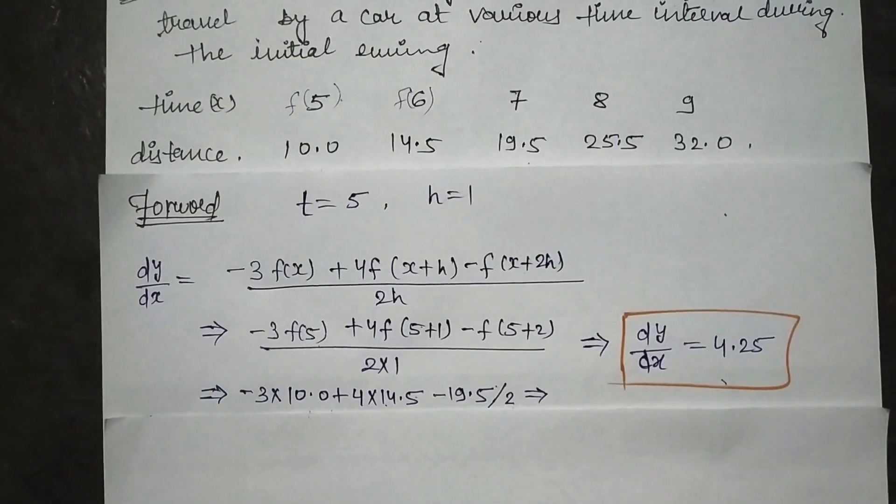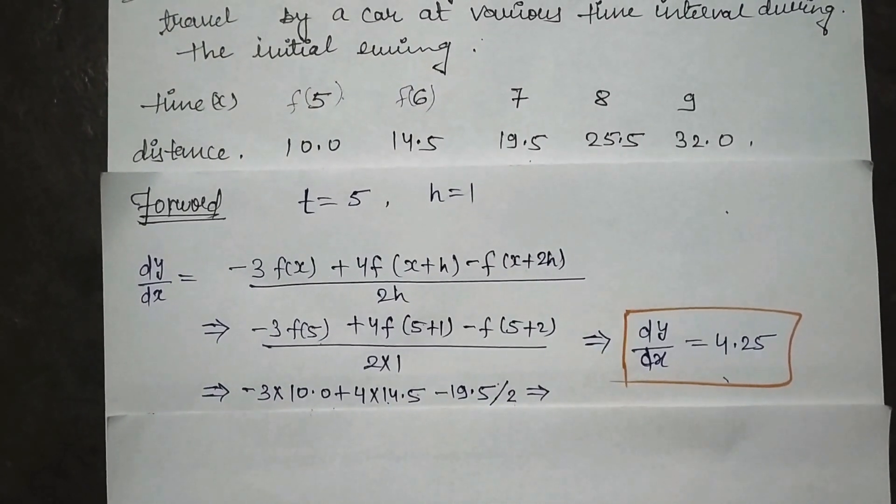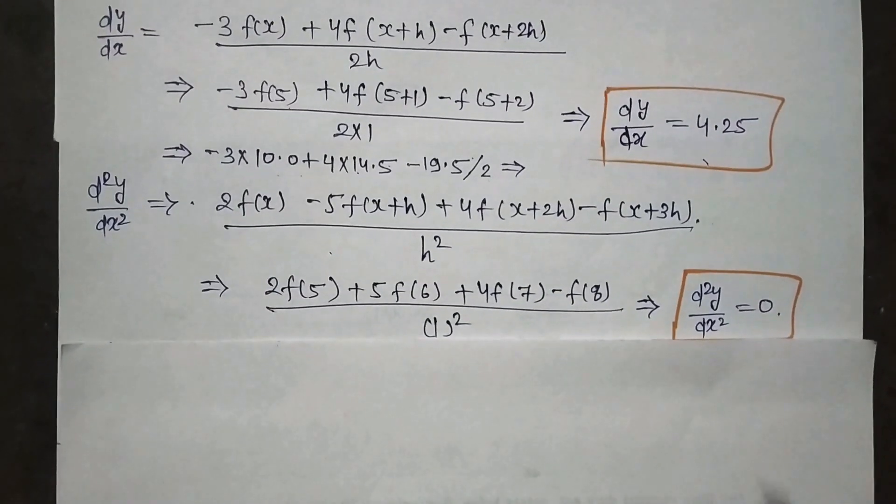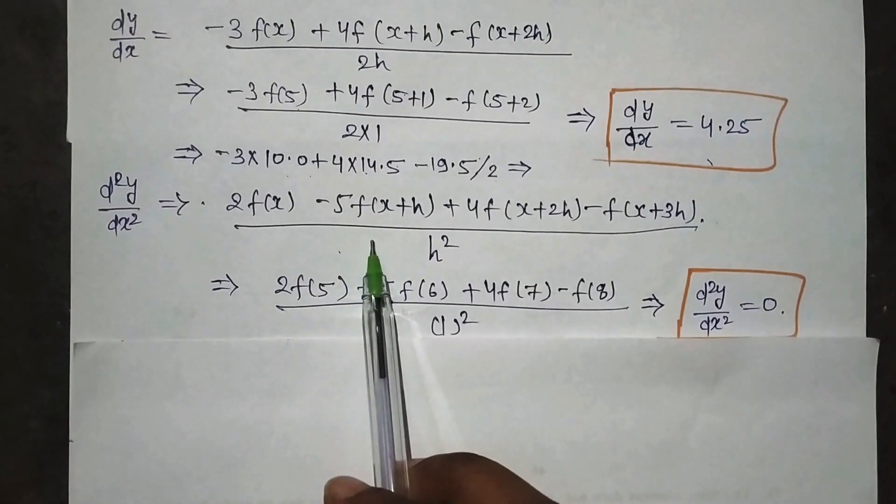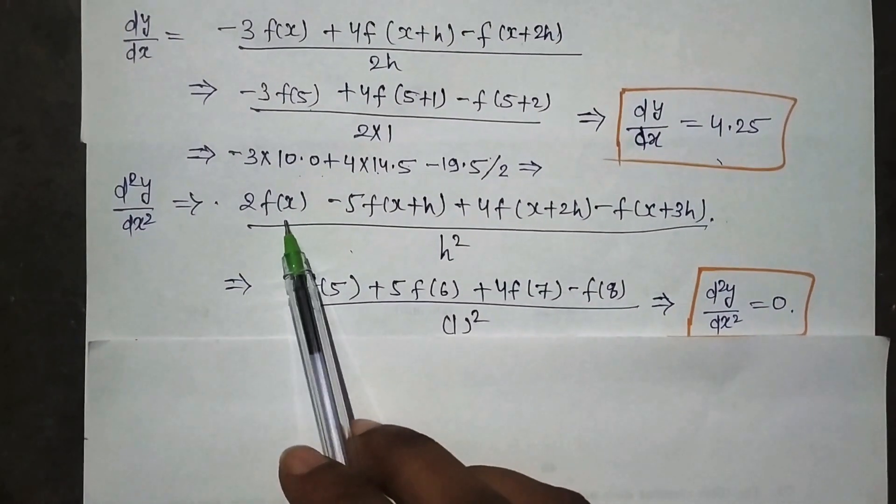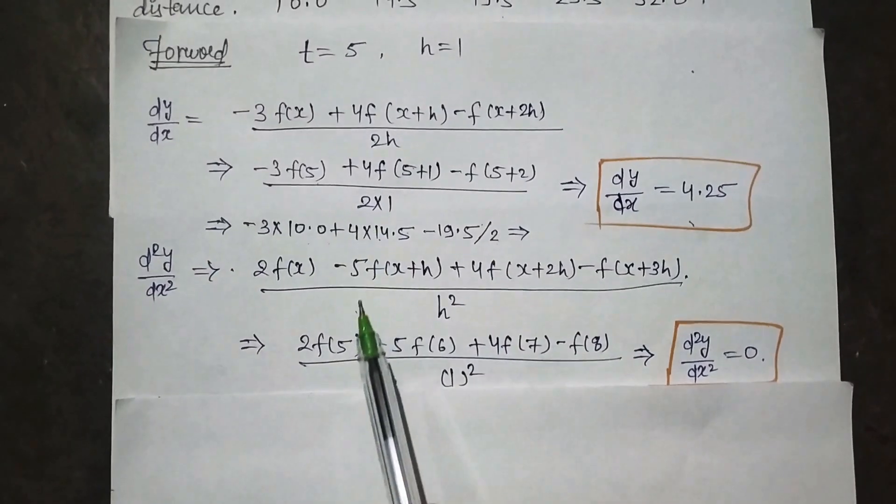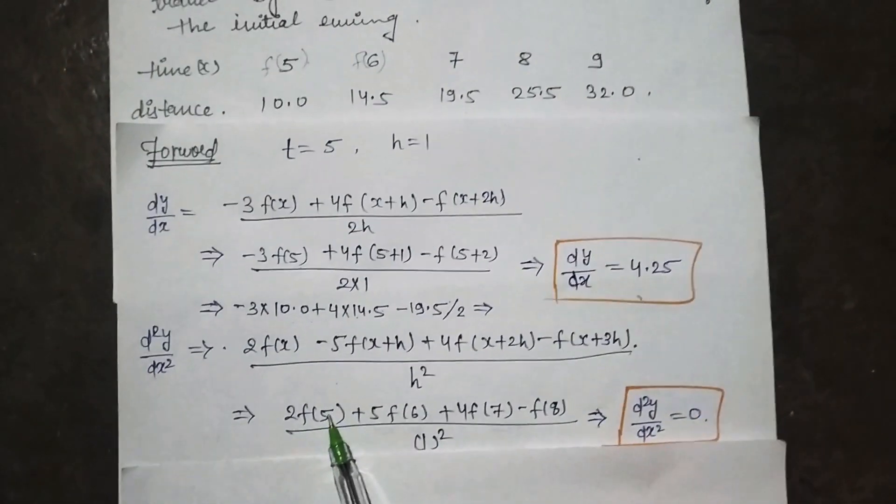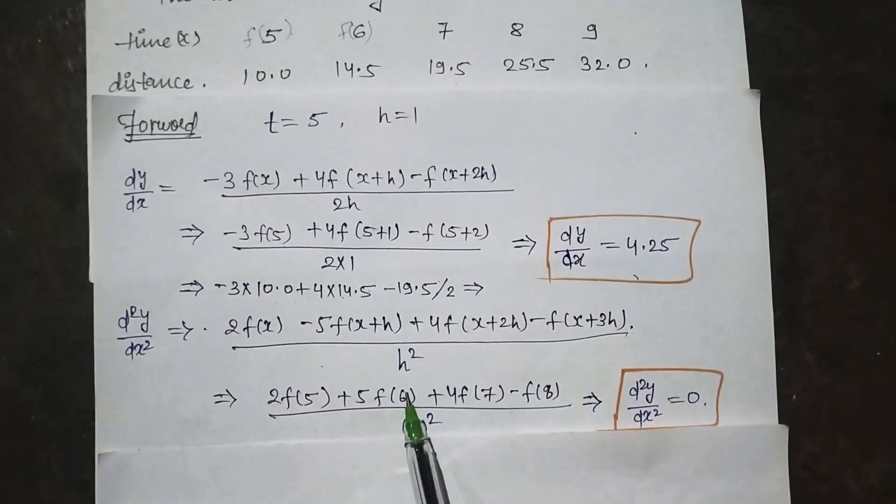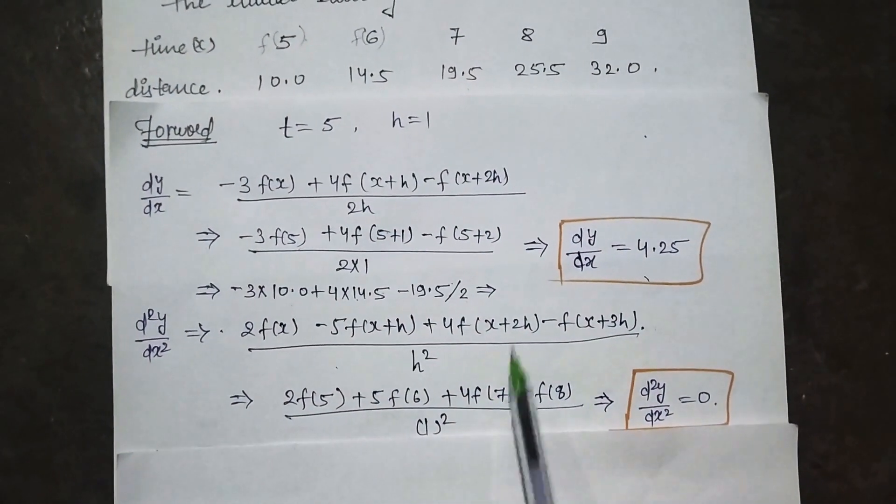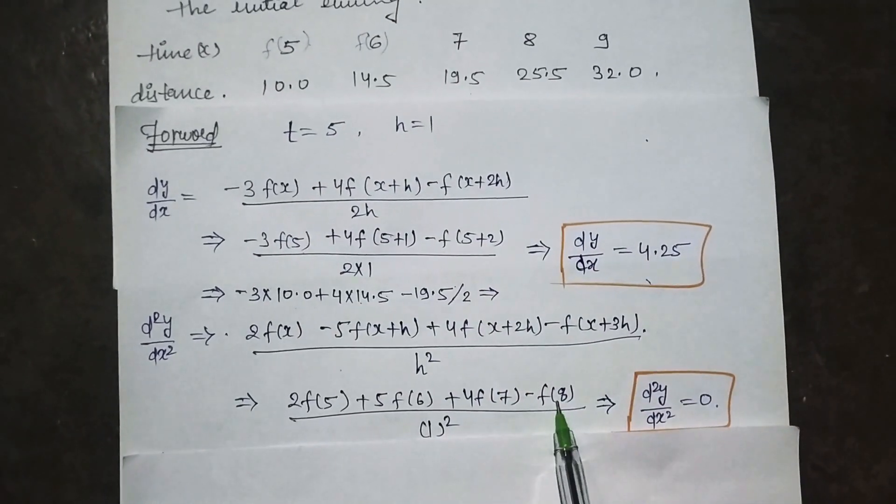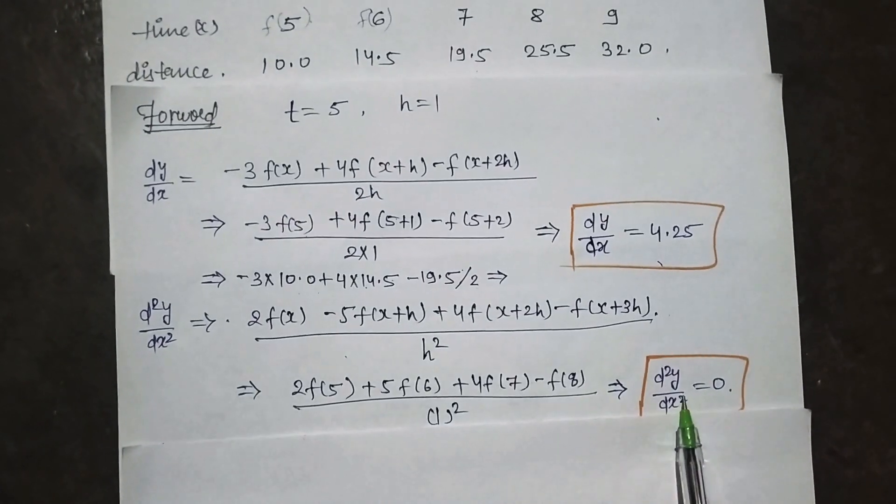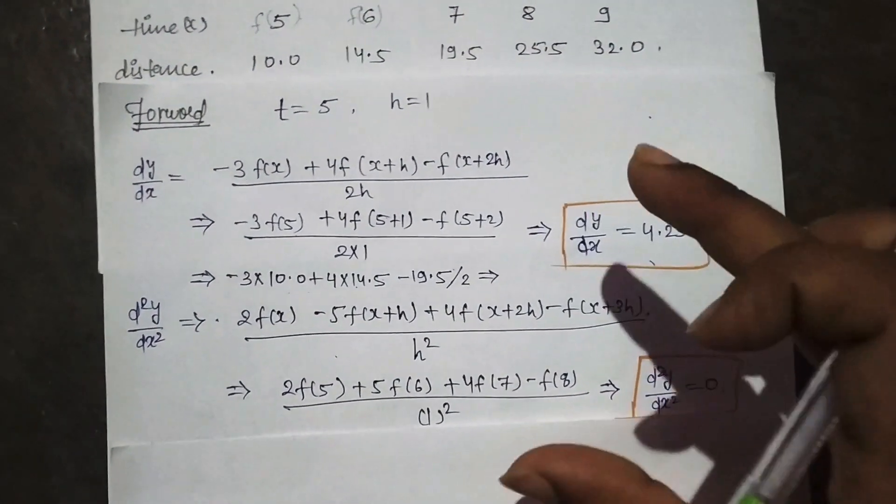Similarly we have central, backward, forward, first, second - for all formulas we have to proceed the same way. This is the formula for the second derivative. It means acceleration. So x value again we will put as 5, because it's for forward. And h value 1. Now see, our f5 is again 10. What is f6 is 14.5, what is f7 is 19.5, and what is f8 is 25.5. We have to put the values and solve this. So we will get the acceleration. This is for the forward.